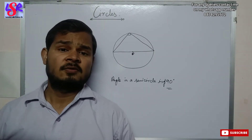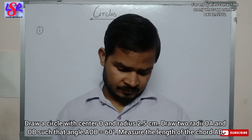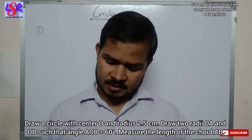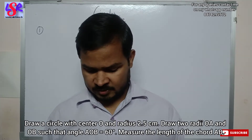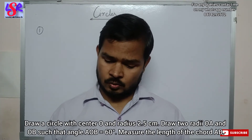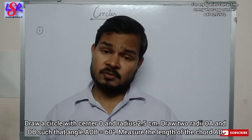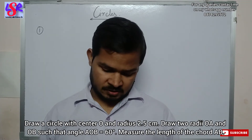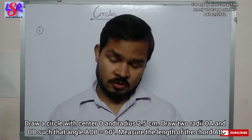Now let us begin with Exercise 15, question number 1. Here we have to draw a circle with center O and radius 2.5 cm, draw two radii OA and OB such that angle AOB is 60 degrees, and measure the length of the chord AB.